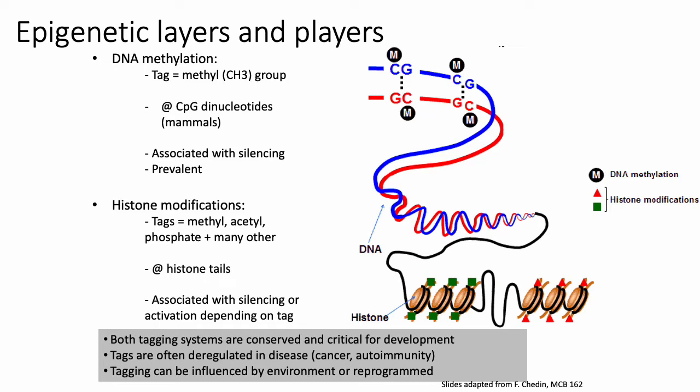Histone modifications are really just post-translational modifications to the tails of histone proteins. The genome doesn't exist as naked DNA in the nucleus — at the most basic level of organization, DNA gets wrapped around groups of histones to form nucleosomes. In those nucleosomes, the tails of the histone proteins can get modified, and those modifications then influence gene regulation.